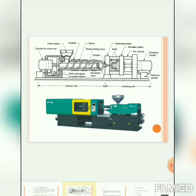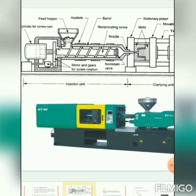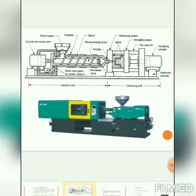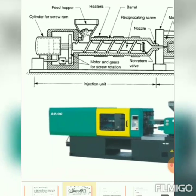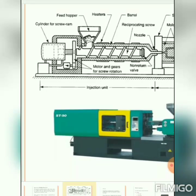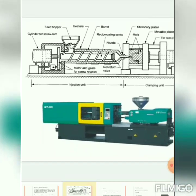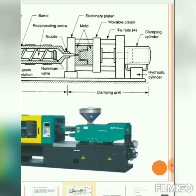Now let's look at the construction of the injection molding machine. This is the schematic or constructional diagram of the injection molding machine. On the left side is the injection unit, which consists of a feed hopper, cylinder, screw ram or reciprocating screw, and nozzle. On the right side is the clamping unit, which consists of the core and cavity, movable plate, and clamping cylinders.